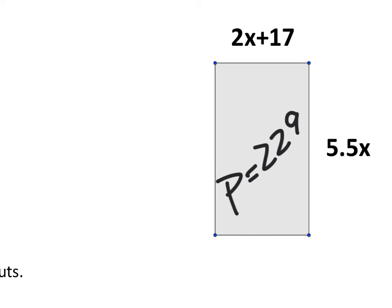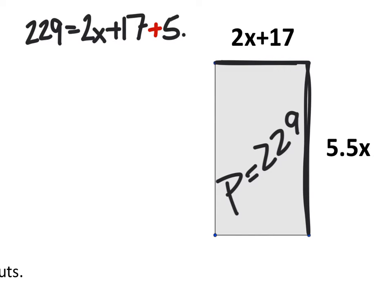So we've written this out, the perimeter is 229. And all we're going to do is add the sides together. So we've got this side length right here, which is 2x plus 17. And we're going to add this side length right here, which is 5.5.